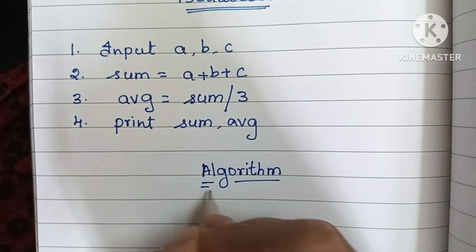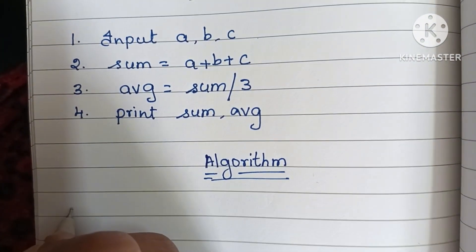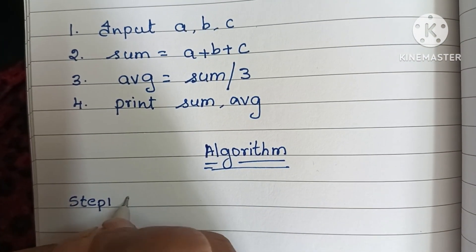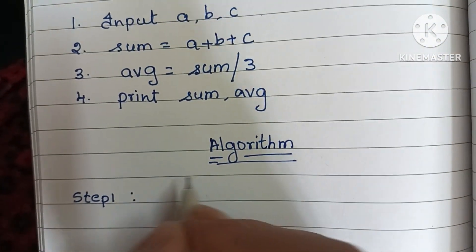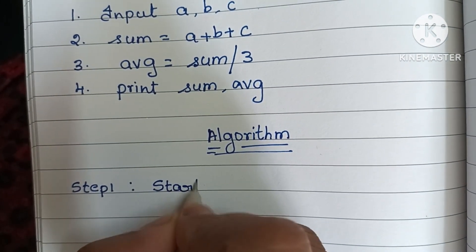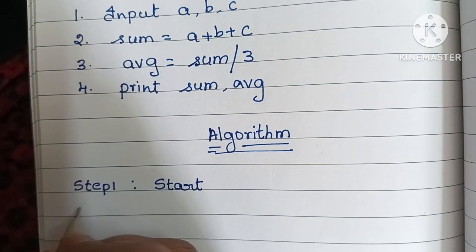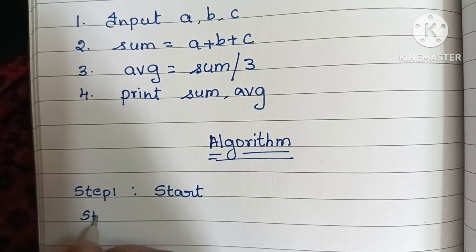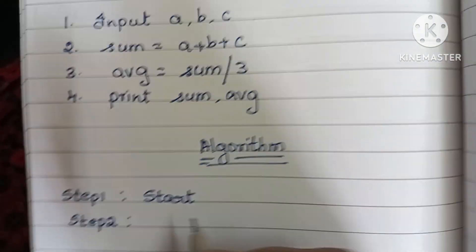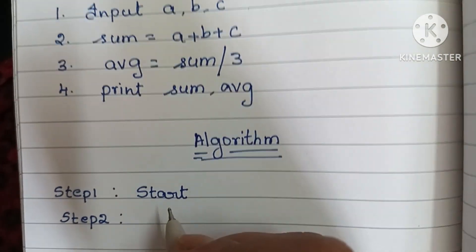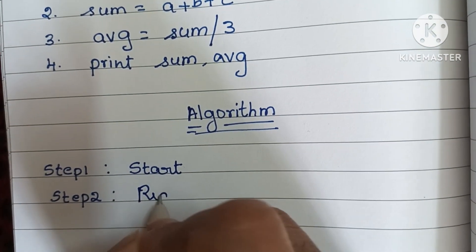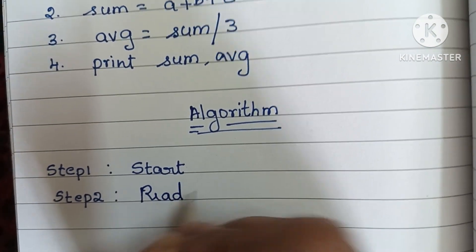Next, we're going to write the algorithm. An algorithm is a step-by-step process to solve a problem. Step 1: an algorithm always starts with a start statement, so first we have to write the start statement.